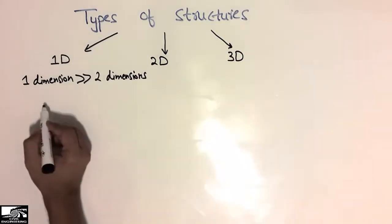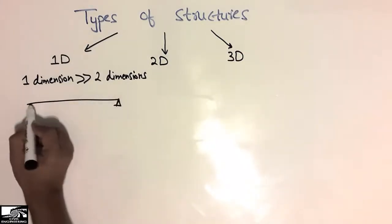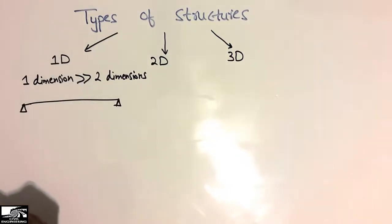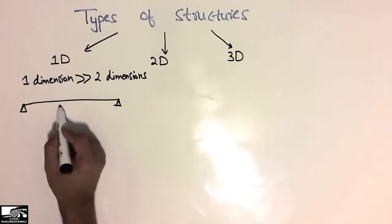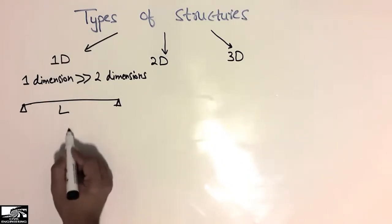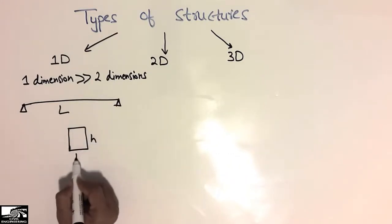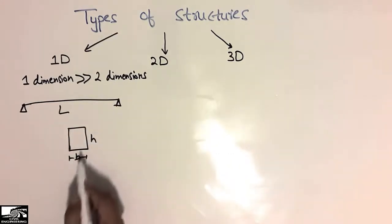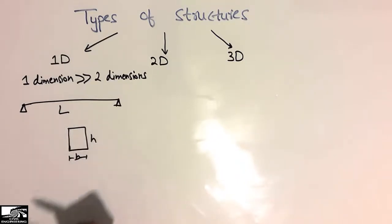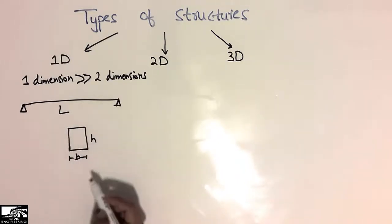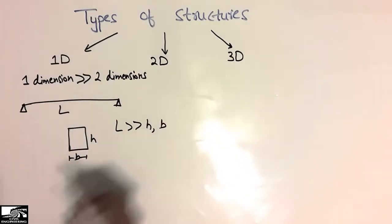For example, if I consider the length of a beam — the beam is a one-dimensional structure. This is the beam of length. In this case, this is the cross-section of the beam — this is the thickness h, and this is the width of the beam. You can see the length of the beam is much greater than the cross-sectional dimensions, meaning the length is much greater than the thickness and the width of the beam.